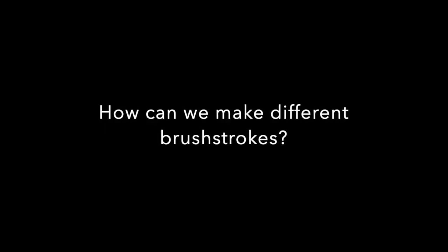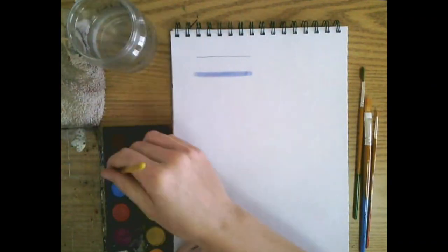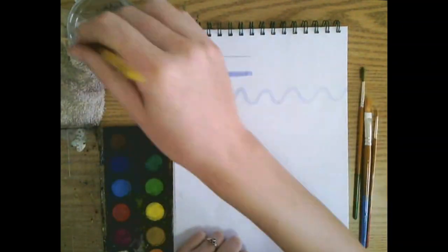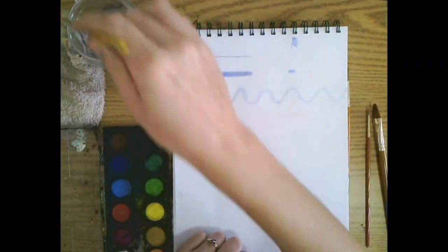How can we make different brush strokes? The first way is by moving our hand. So we want to drag our paintbrush across the paper, and how we drag it will change our brush stroke.